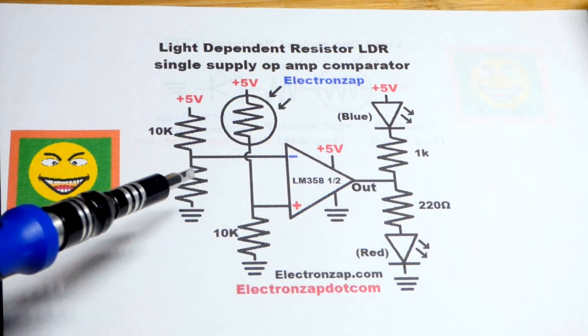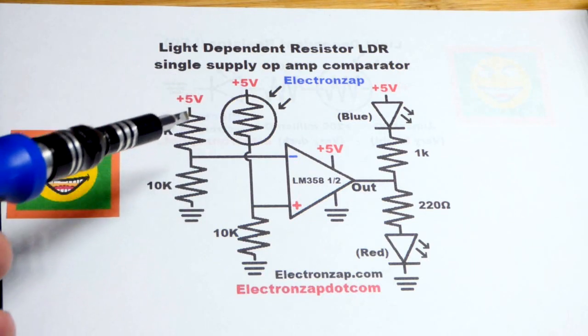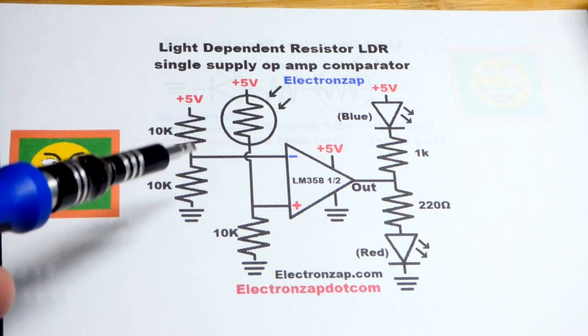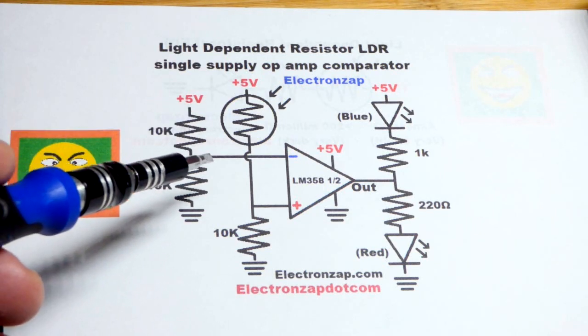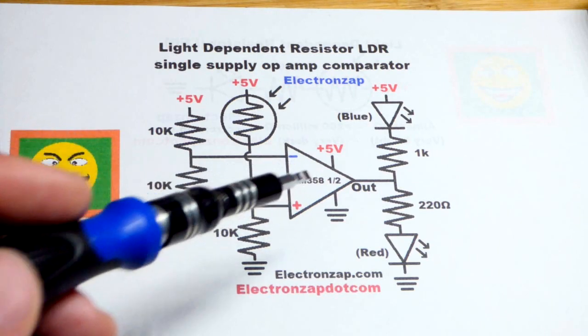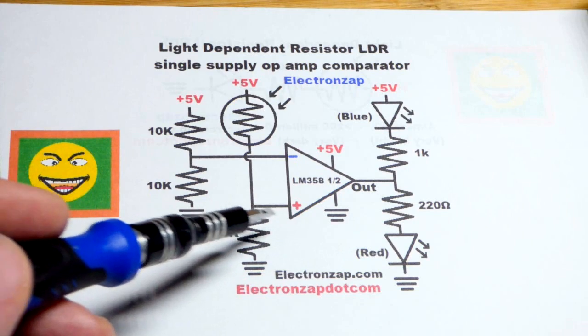We have the same wiring we've been using in these videos. A couple of 10 kilo-ohm resistors setting half of the supply voltage, since half the resistance is on each side of the supply there, going to the inverting input. That's the voltage that the op-amp is going to look at and compare to the non-inverting input.